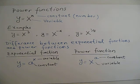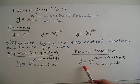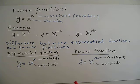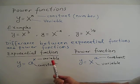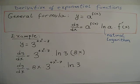What is the difference between exponential functions and power functions? For an exponential function y = a^x, the base is constant and the exponent is variable. But in a power function y = x^a, the base is variable and the exponent is constant. The difference can be seen very clearly.